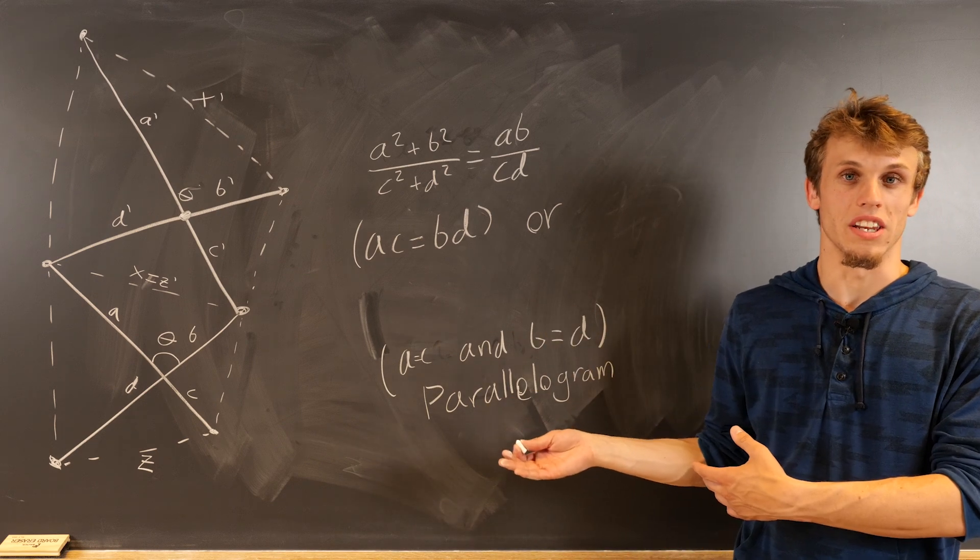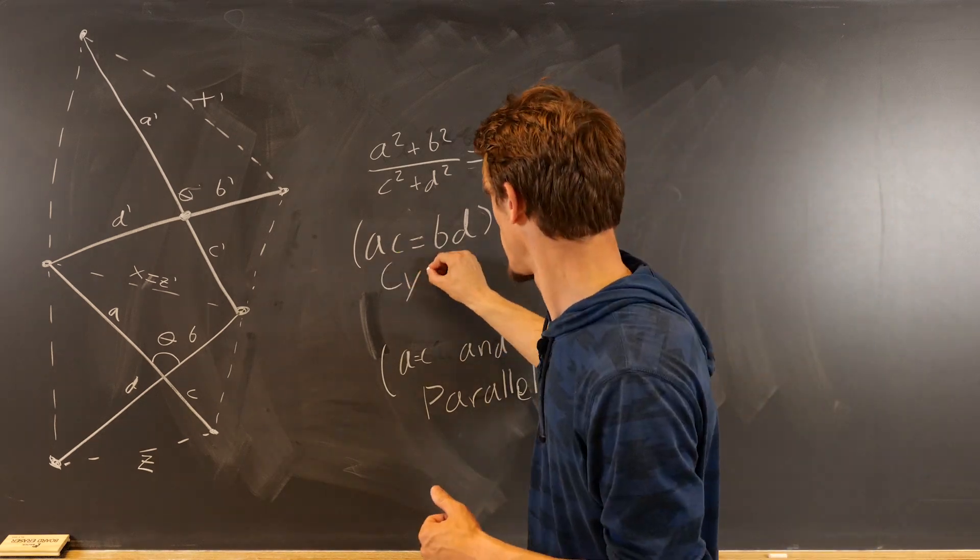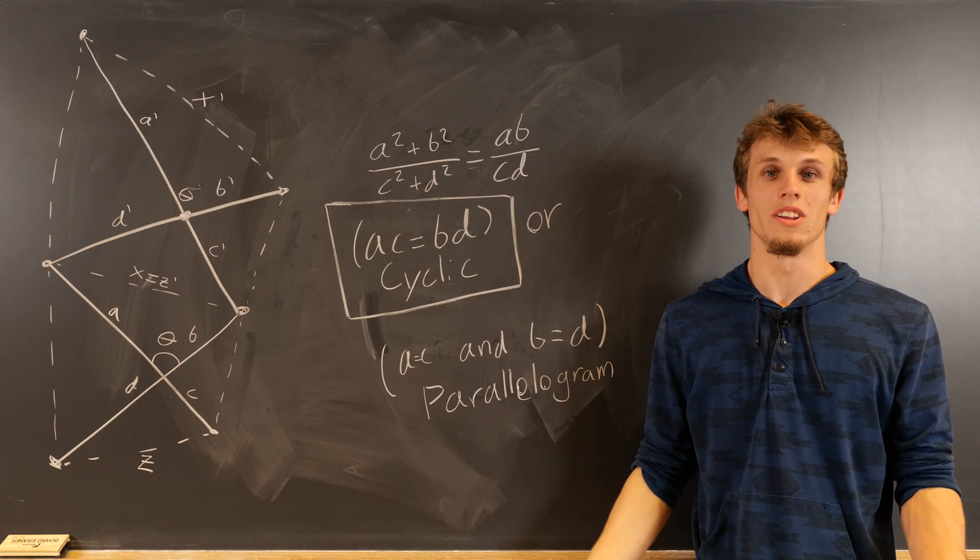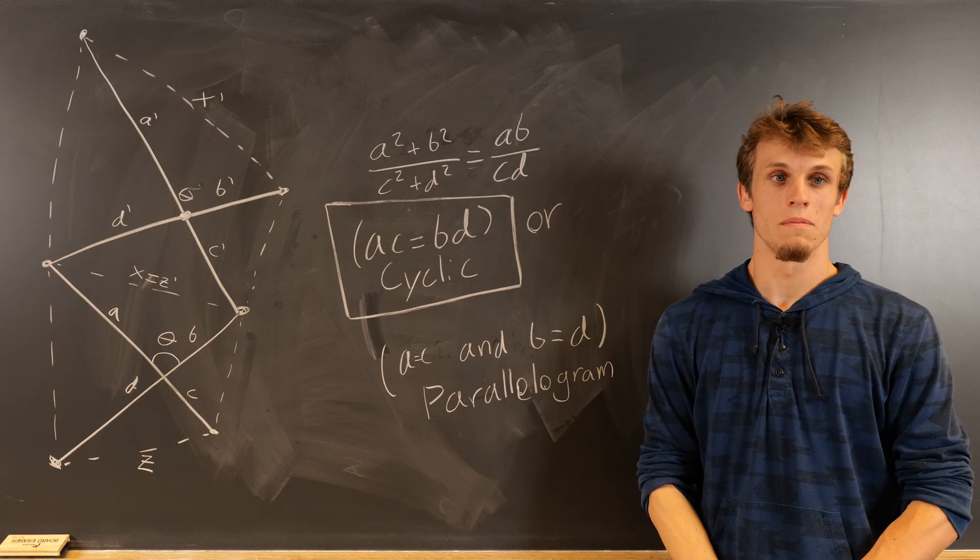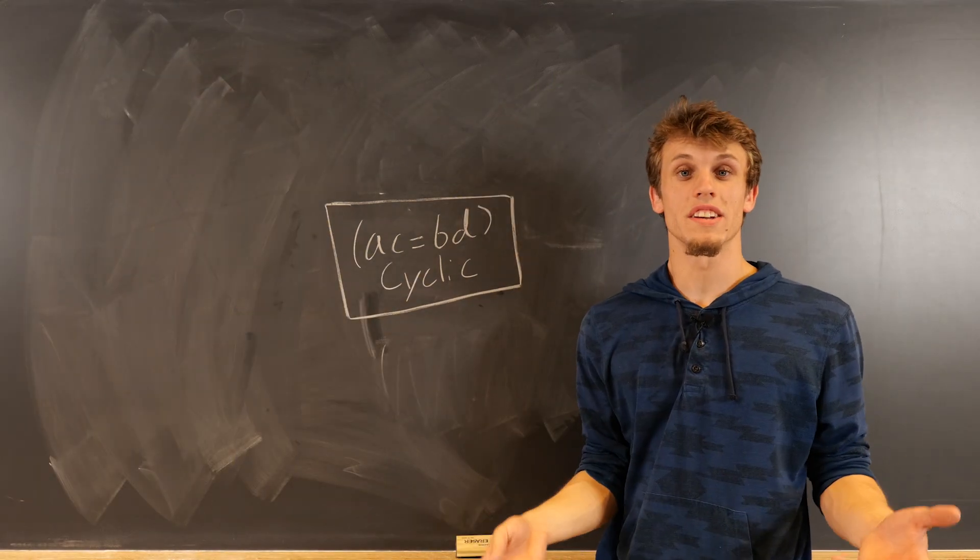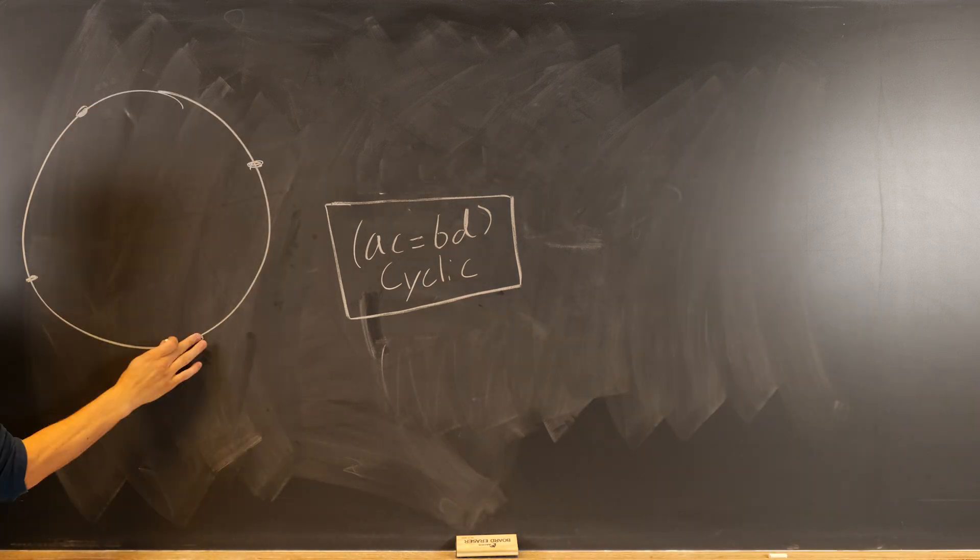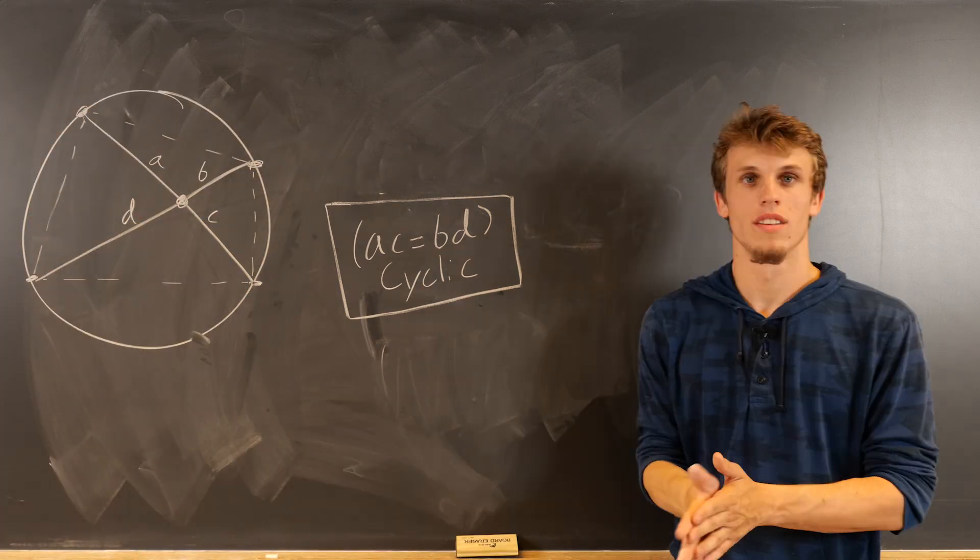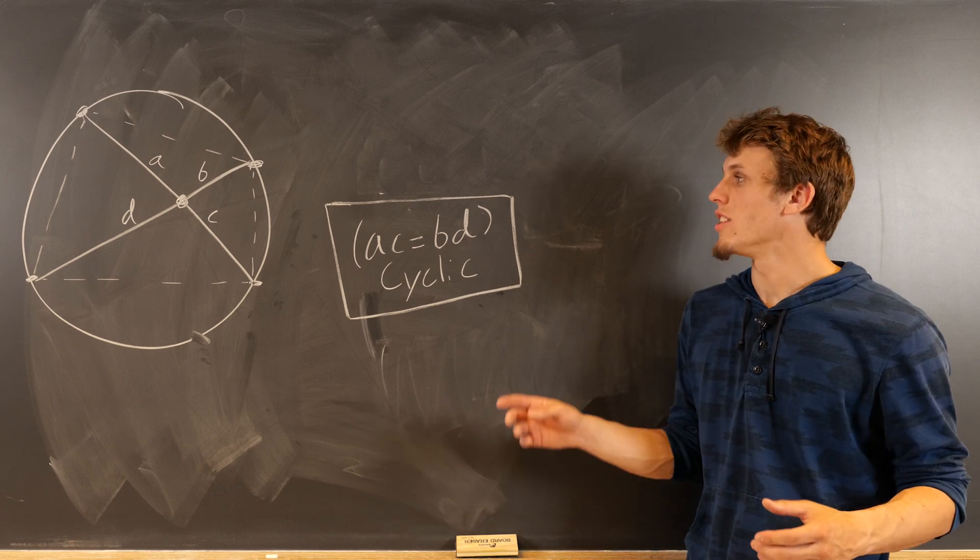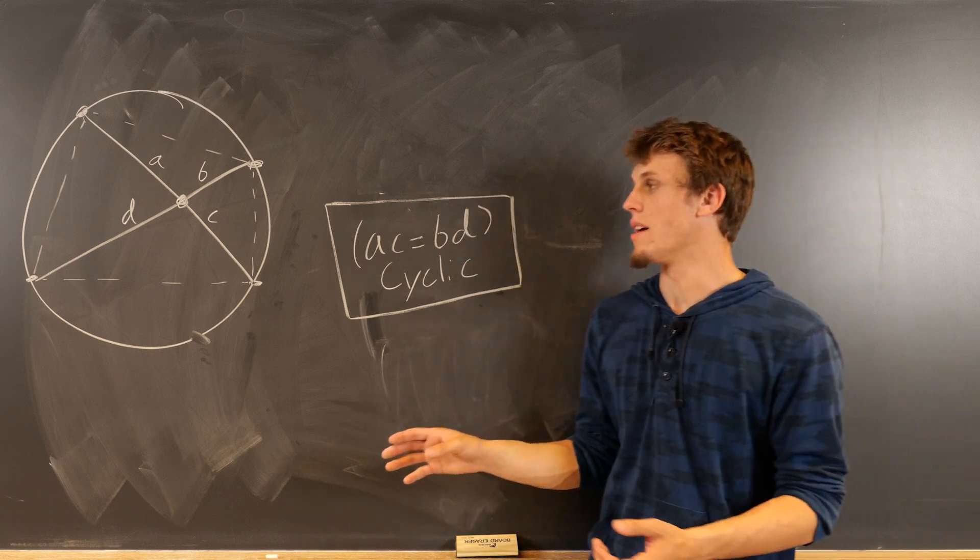The other possibility is a cyclic quadrilateral. So what exactly is a cyclic quadrilateral? A cyclic quadrilateral is one whose vertices all lie upon a circle.